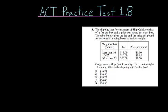The eighth problem of this first ACT practice test focuses on reading this table. The shipping rate for customers of Ship Quick consists of a fee per box and a price per pound for each box. The table below gives the fee and the price per pound for customers shipping boxes of various weights. Greg wants to ship one box that weighs 15 pounds. What is the shipping rate for this box?